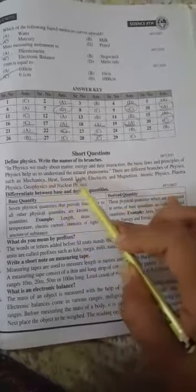Differentiate between base and derived quantities. All the physical quantities that provide foundation and are fundamental to the other quantities are called base quantities, while derived quantities are those that are derived in terms of base quantities.